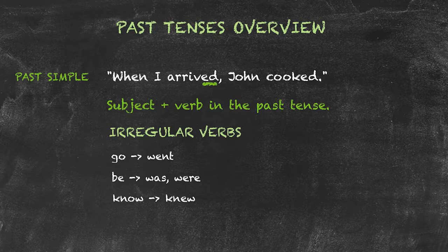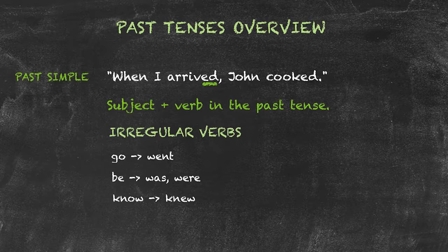The past tense, as we can see, is used for completed past actions. I arrived in the past, and John cooked in the past. They give us the order in which past events happen — I arrived first, and then John cooked.